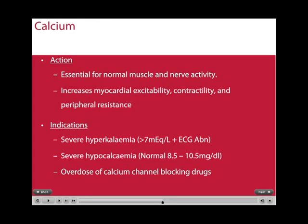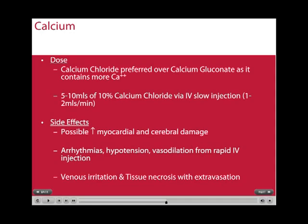Calcium is essential for normal muscle and nerve activity, and it increases myocardial excitability, contractility, and peripheral resistance. In cardiac arrest, its indications are for severe hypokalemia, severe hypocalcemia, and overdose of calcium channel blocking drugs. Calcium chloride is preferred over calcium gluconate as it contains more ionised calcium. 5-10 ml of 10% calcium chloride is given via slow IV injection. Possible side effects include increased myocardial and cerebral damage, arrhythmias, hypertension, vasodilation from rapid IV injection, venous irritation, and severe tissue necrosis if extravasation of the calcium chloride occurs.